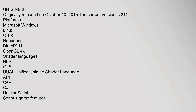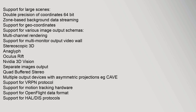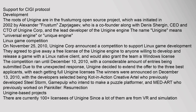Unigine 2 platforms include Microsoft Windows, Linux, and OS X. Rendering supports DirectX 11 and OpenGL 4.x. Shader languages include HLSL, GLSL, and UUSL (Unified Unigine Shader Language). The API supports C++, C#, and UnigineScript. Serious game features include support for large scenes, double precision coordinates (64-bit), zone-based background data streaming, geo-coordinates support, multi-channel rendering, multi-monitor output, video wall, stereoscopic 3D, Oculus Rift, NVIDIA 3D Vision, VRPN protocol, motion tracking, OpenFlight data format, and HAL/DIS and CIGI protocols.